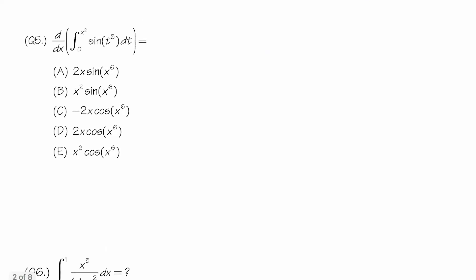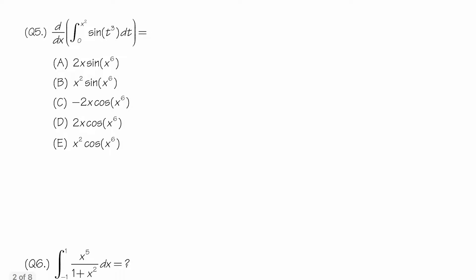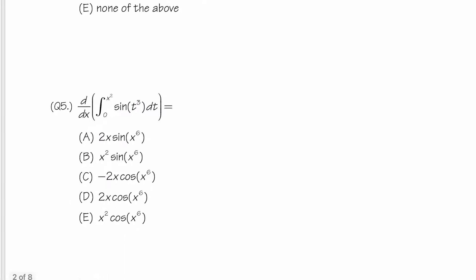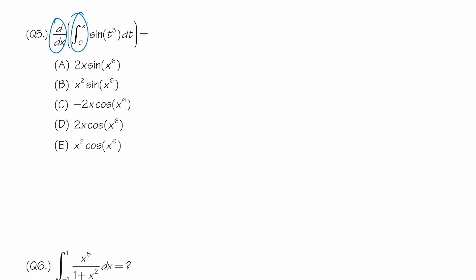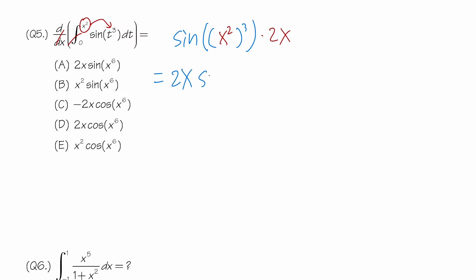Number 5: Fundamental Theorem of Calculus Part 1 — we're differentiating an integral function. The derivative and integral cancel, but notice the upper limit is x², not x, so we use the chain rule. We get sine of (t³) evaluated at t = x², which gives sin(x⁶), then multiply by the derivative of x², which is 2x. Putting 2x at the front: 2x·sin(x⁶). Answer: 8.